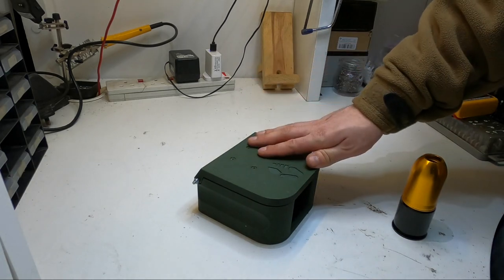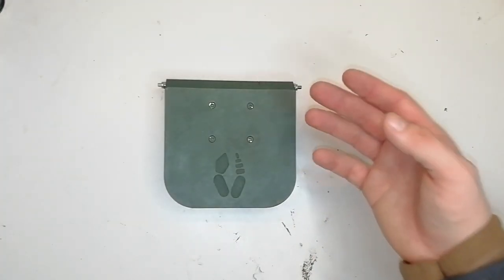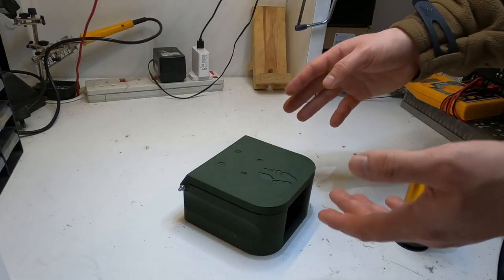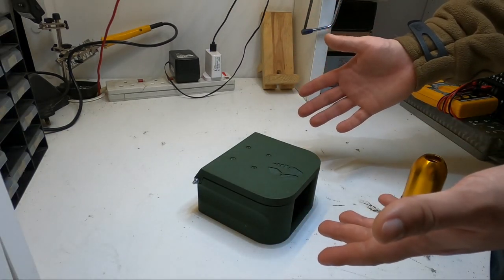To use the Rattlesnake, first of all like any other airsoft mine you've got to find a suitable location to use it. Ideally somewhere where you're going to get a lot of enemy traffic which can be funneled towards the mine. You want to find an area where there is going to be little to no friendly, marshal, or dead player activity. Easier said than done though.